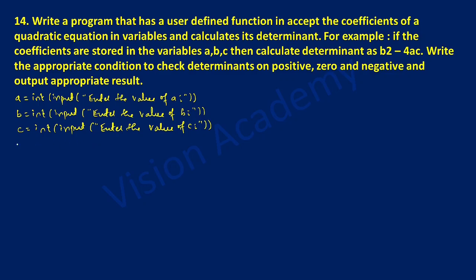Now we are going to write the function definition. I am going to write def as a keyword, then the name of the function as disc, and we will take these three parameters a, b, c and put a colon as per the syntax of the function definition. After this we have to give tab space, that is called indentation. Here I am going to write d is equal to b squared minus 4ac, where b squared is written as b double asterisk 2, minus 4 into a into c. After evaluating this expression the value will be stored in variable d, and this function returns d. So here I am going to write return d.